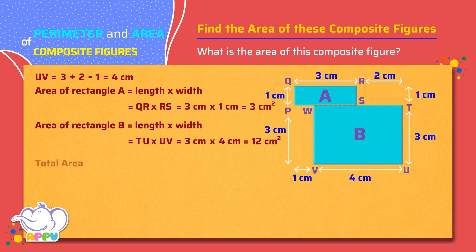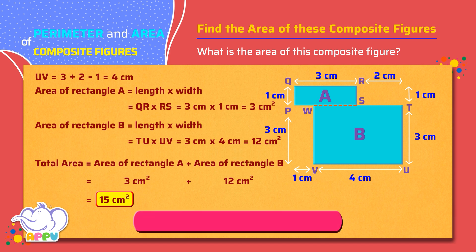Total Area equals Area of Rectangle A plus Area of Rectangle B equals 3 square centimeters plus 12 square centimeters equals 15 square centimeters. So the area of the composite figure is 15 square centimeters.